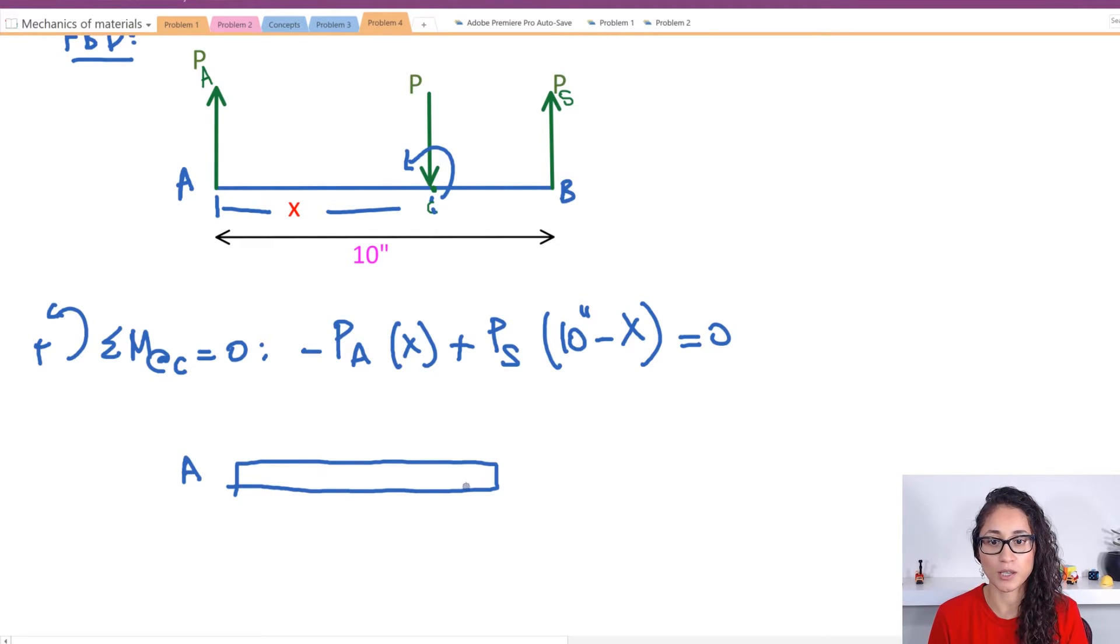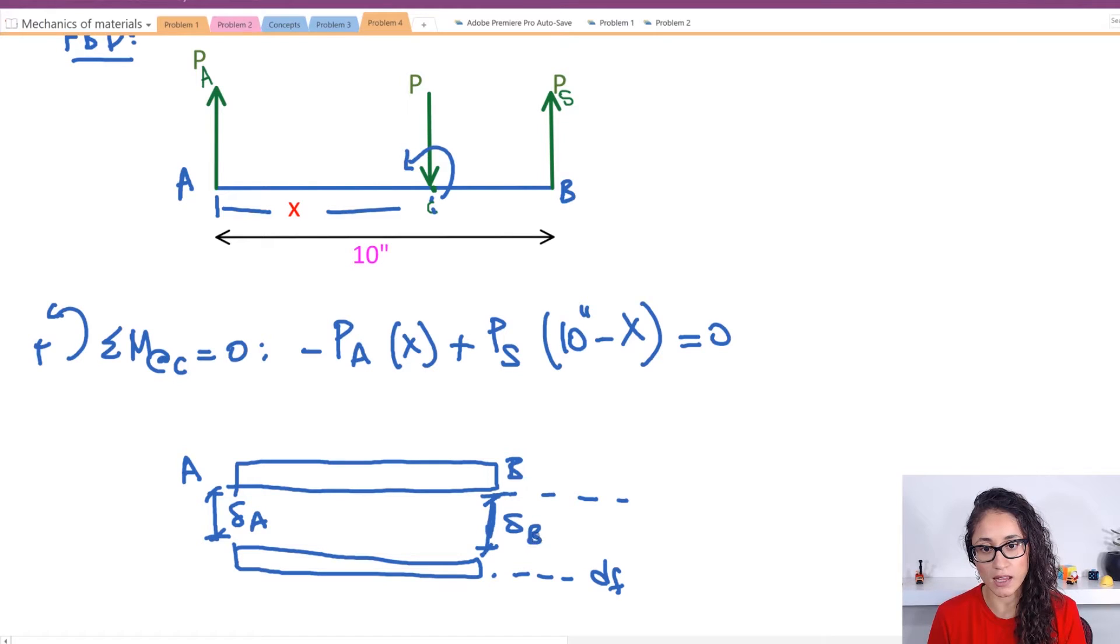So let's say this is bar AB and initially it was here. So this bar is going to move down, let's say to here. This is final distance DF and so this displacement has to be the same as this displacement, right? Because that's what the problem stated. So I have displacement A is equal to displacement B.